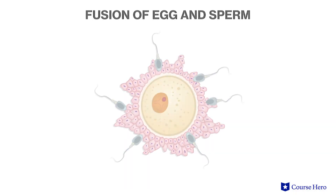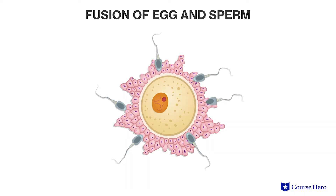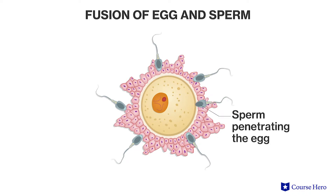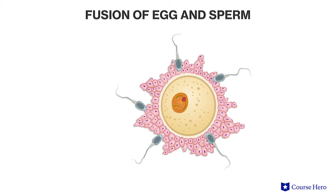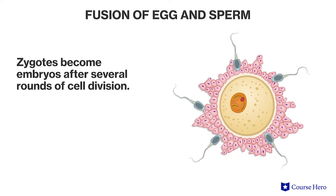Sexual reproduction is a form of reproduction involving fusion of gametes, producing genetically unique offspring. It requires the fertilization of an egg by a sperm cell to generate a zygote.